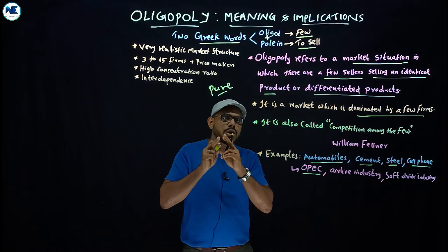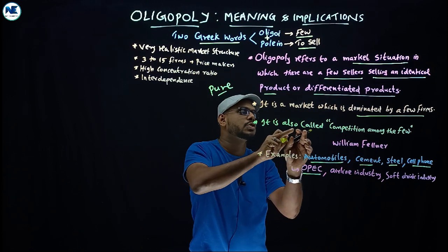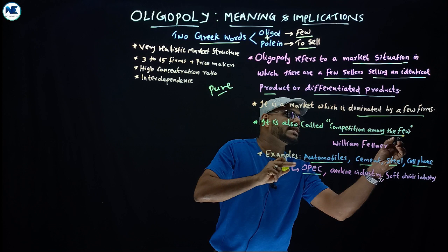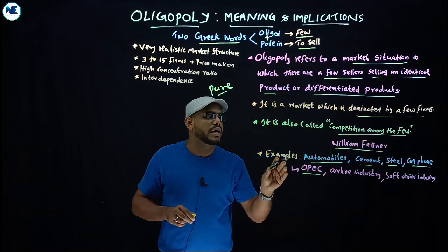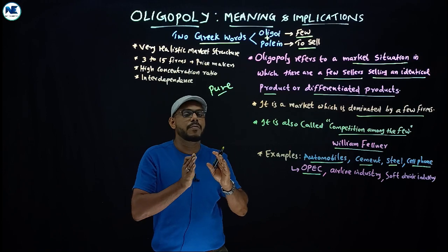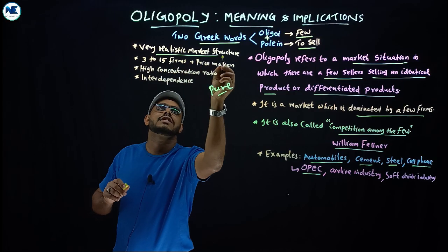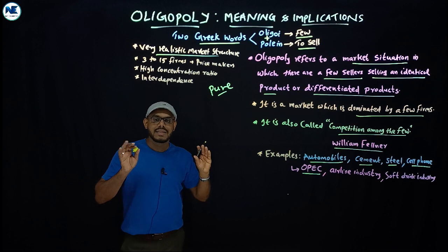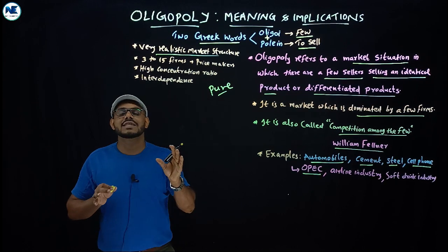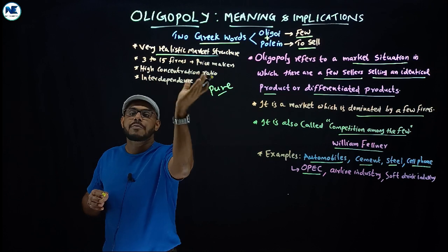Oligopoly market is also called competition among the few. That point was highlighted by American economist William Fellner. We can conclude by stating that oligopoly market is a very realistic market structure in the world that we can experience.